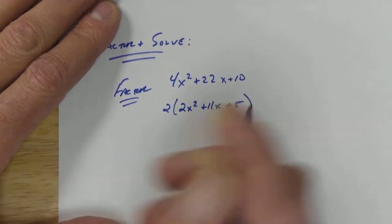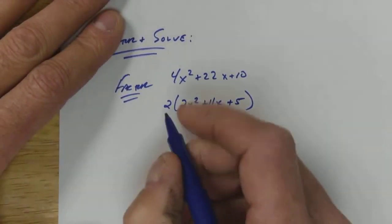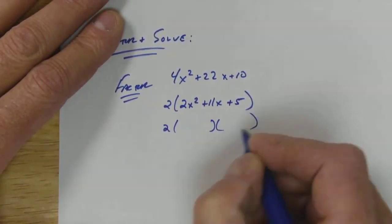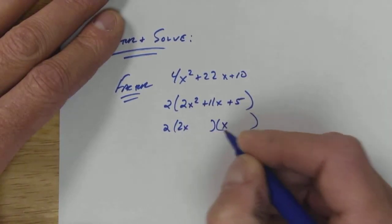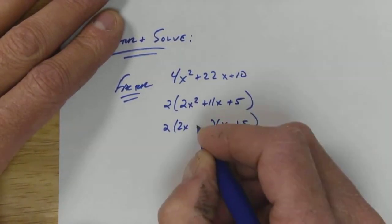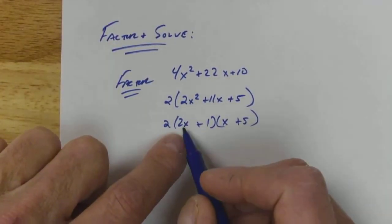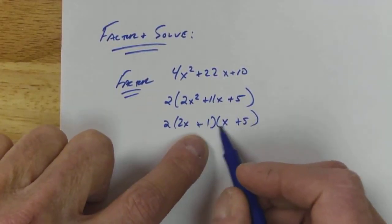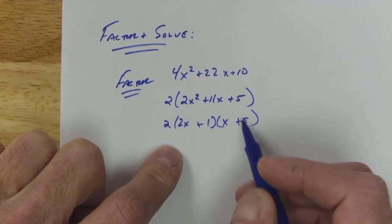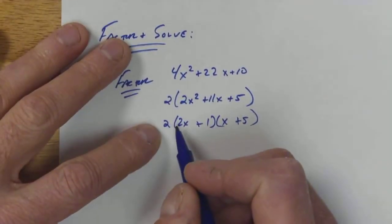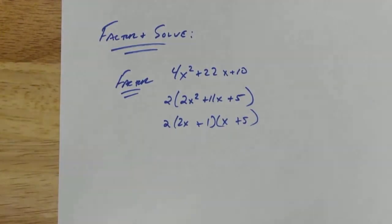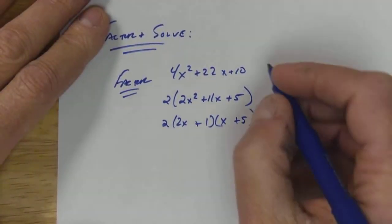That is the thing that's going to be the most important for you at times: to go ahead and make your life as easy as possible. So let's go ahead and double check it. 2x squared, 1 and 10 gives me 11, and 5, good. And then you have the 2, so you're in good shape. So that would be the factored form.